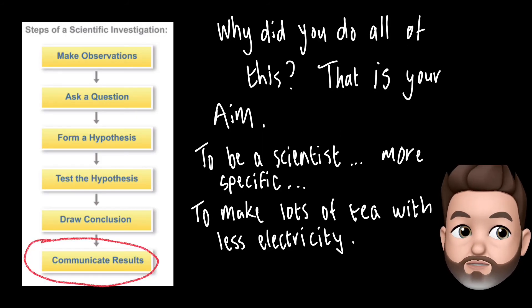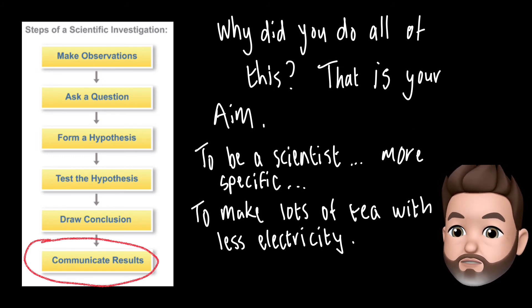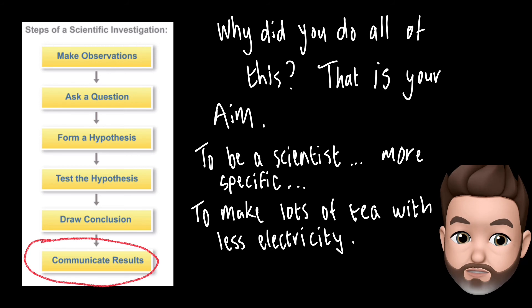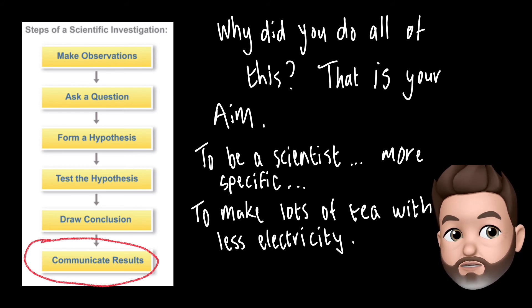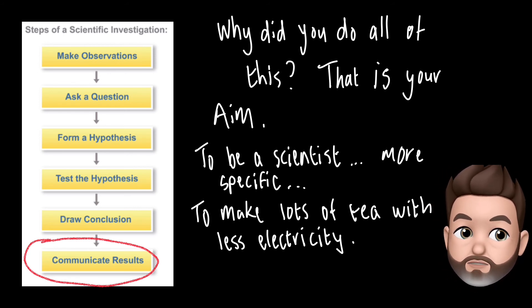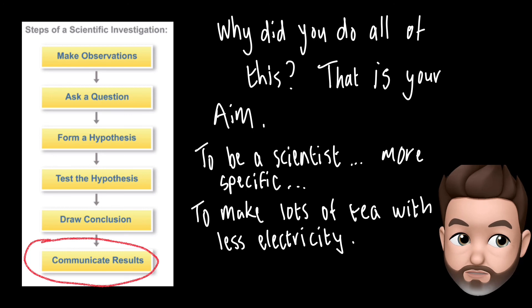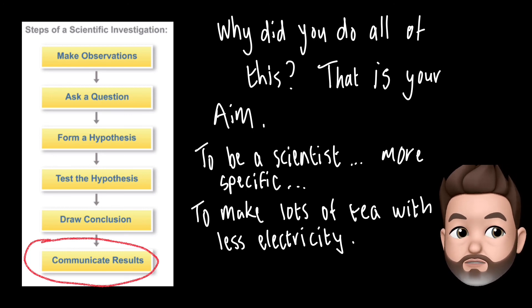Something else that people get confused with is what the aim of an investigation is. Now, the aim is something you write about when you are communicating your results of a scientific investigation. So we're jumping past all the testing of the actual hypothesis, all the results gathering and drawing conclusions, and looking at what your aim was. Your aim is why did you do all of this? And you need to be specific. You can't just say to be a scientist. You need to say to make lots of tea with less electricity, perhaps.